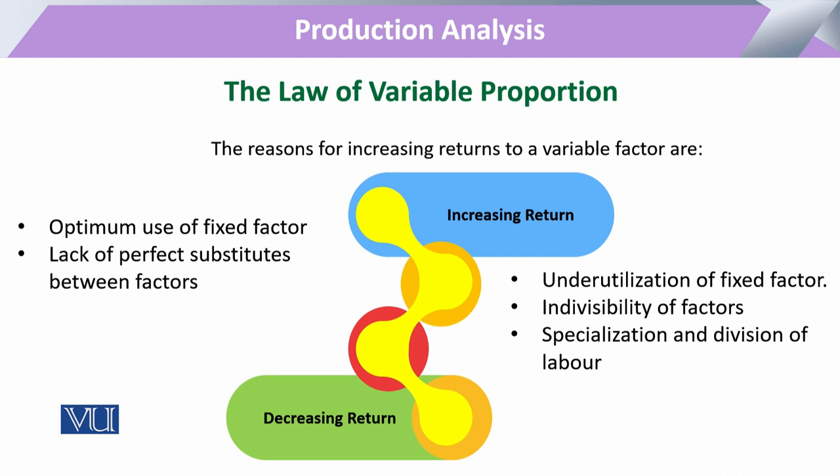When we say decreasing returns, there are certain factors behind those decreasing returns. All types of fixed factors — whether in industry or agriculture — have a very particular optimal level. Beyond that optimal level, it is not possible for those fixed factors to have their contribution to output. So the fixed factors cannot contribute further to output quality, and there can be a decline.